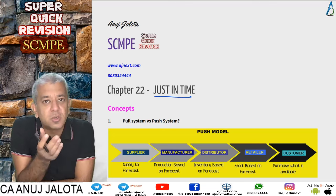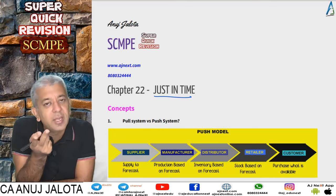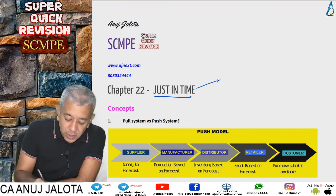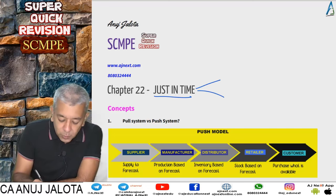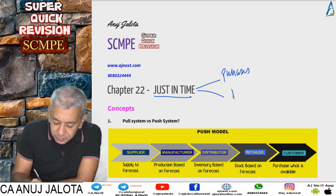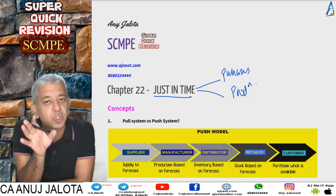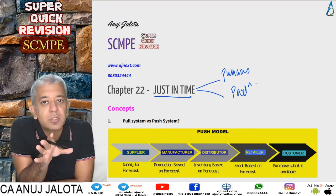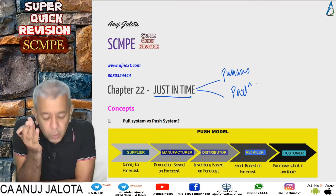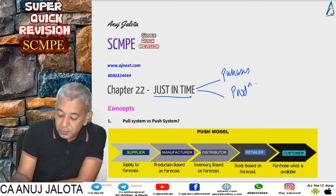Just In Time is the third application of lean systems. Lean systems try to cut down wastages of all types. JIT is all about wastages of excessive stocks — which could be of raw material or finished goods. This chapter is divided into two parts: Just In Time Purchases and Just In Time Production.